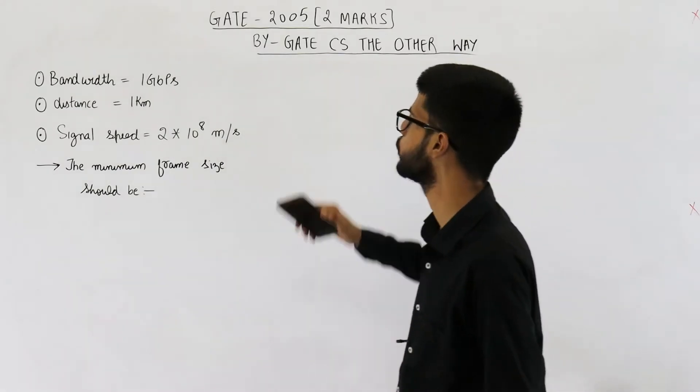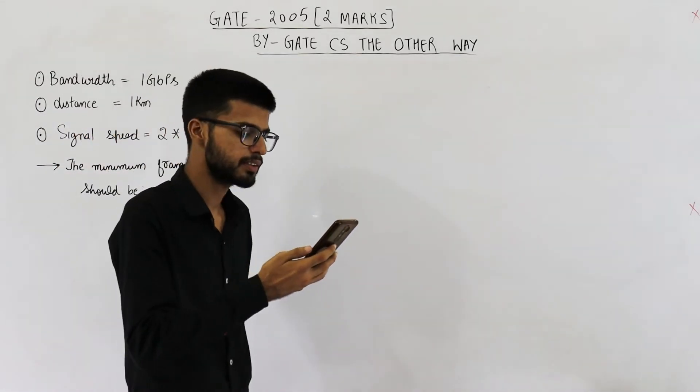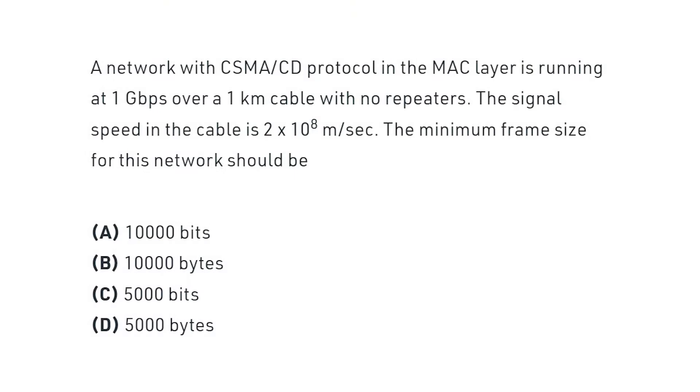So it was for two marks. Just have a look at the statement. They are saying a network with CSMA/CD protocol in the MAC layer is running at 1 Gbps over a 1 km cable with no repeaters.